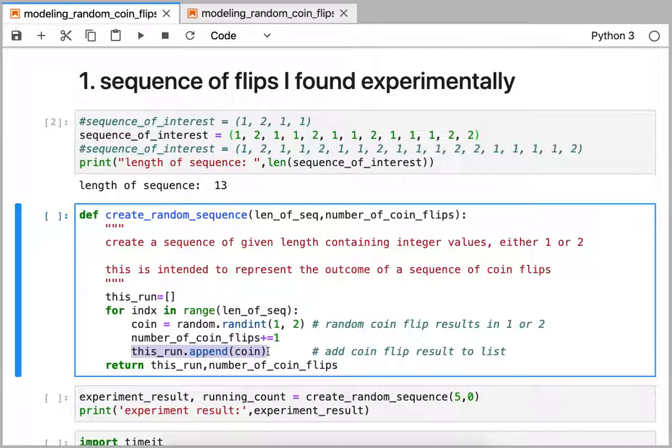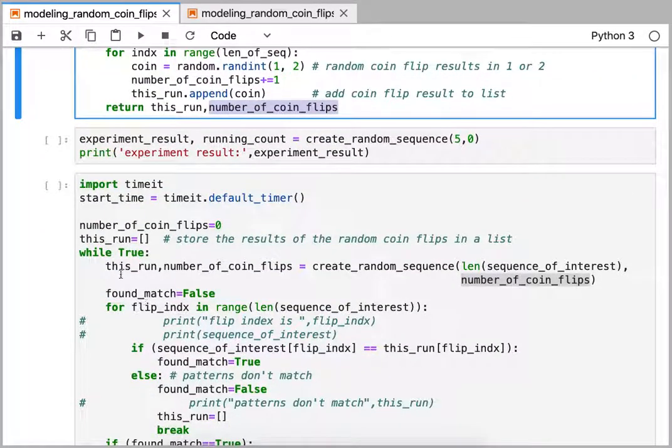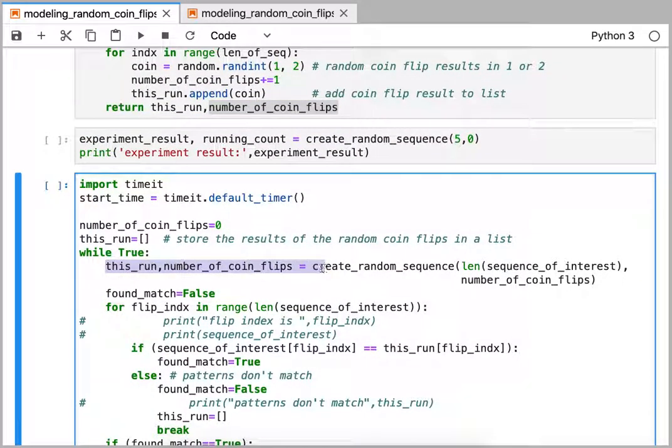Now we have a list of coin flip values and the total number of coin flips that have been generated so far, and we return those two values back from the function. These two parameters are being set by this function which takes two arguments.